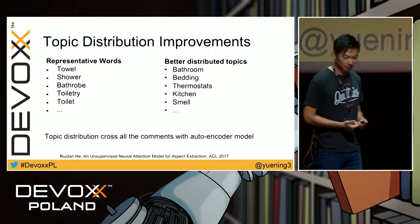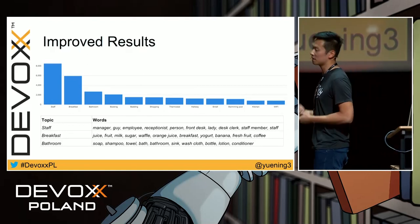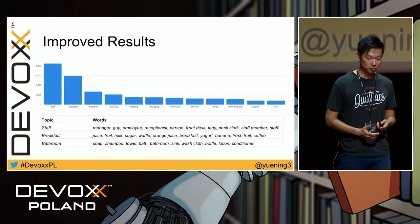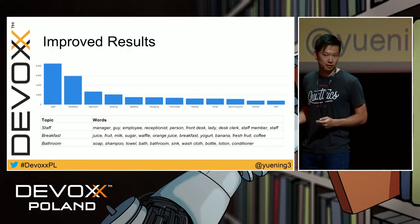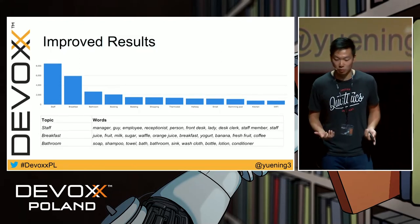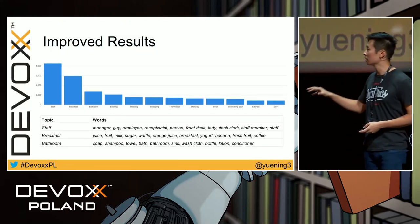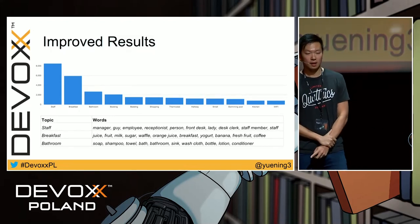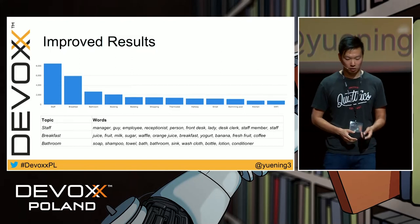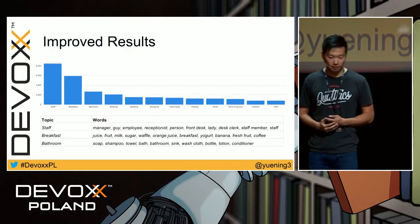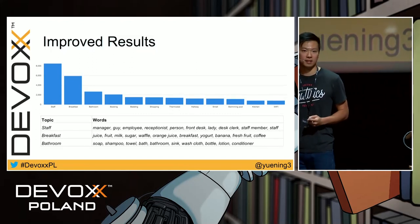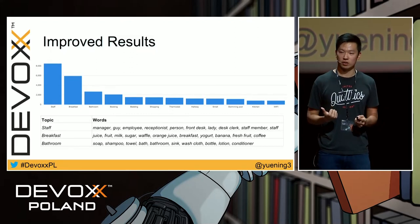Now with better coherence and better distribution, let's look at the results. For my fancy hotel, the top topics being talked about in feedback are staff, breakfast, and bathroom. There are also other aspects like service, facility, and hotel room — booking, bedding, hallway, smell, swimming pool. The sample topics now show more semantically related words: for staff, we get manager, employee, receptionist; for bathroom, we get soap, shampoo, towel, and conditioner. So we now have a way to automatically run through comments and give clients insights into what people are talking about.